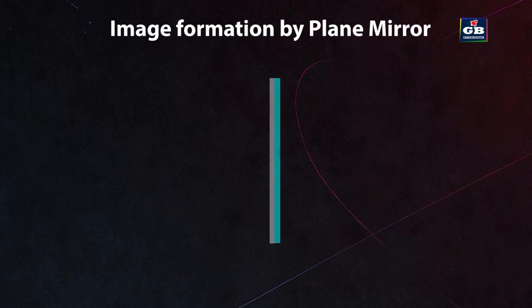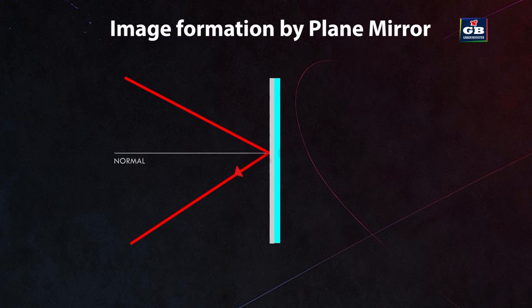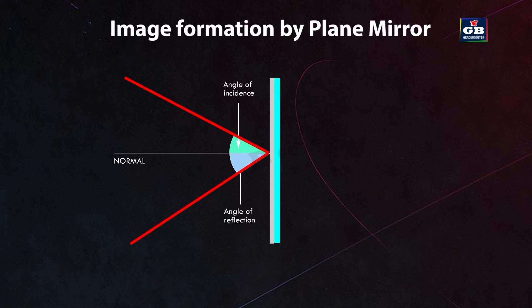Let us study the reflection of light with a plane mirror. When a light ray strikes a plane mirror, it gets reflected back. According to the laws of reflection, the angle of reflection is equal to the angle of incidence.